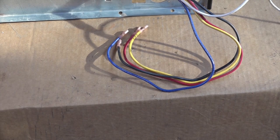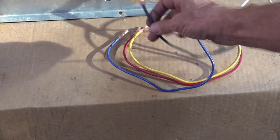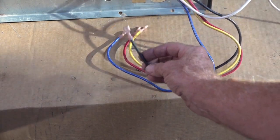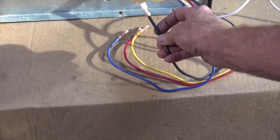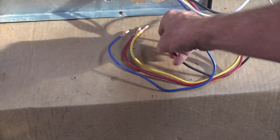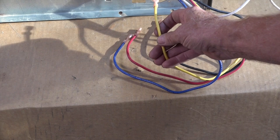Which one's which? Well, the shortest winding is the high speed, that's this one right here. And it's black. That's the shortest winding. The yellow is medium high, it's a little longer winding.